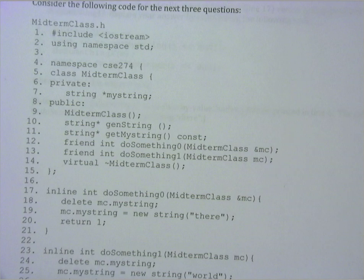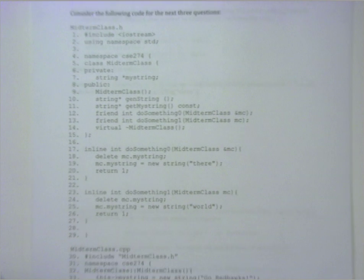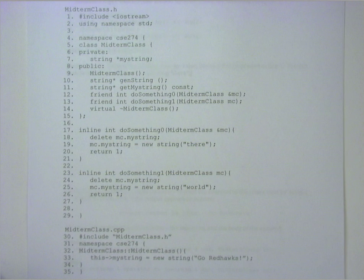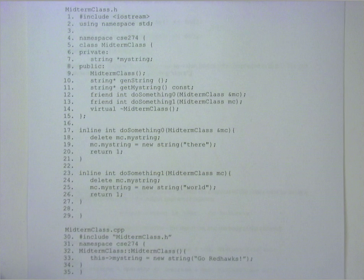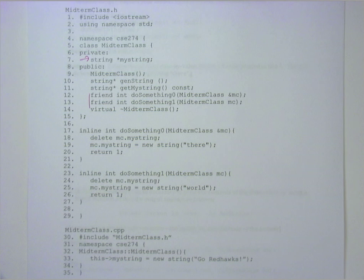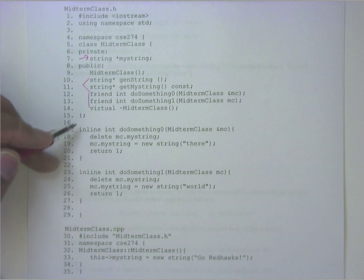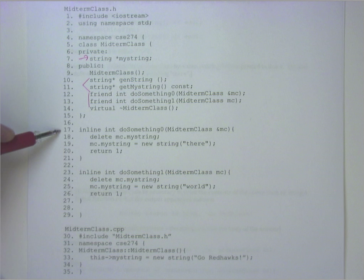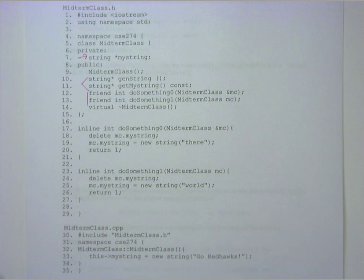The next few questions were based on using this code here for midterm class. There's a number of different features here that you wanted to pay attention to. There were some friend functions here. This had a private attribute of string. There were two methods that were used to generate strings. You see here that in lines 17 to 26, we have the friend functions. And then at the bottom is the code for a constructor. With this in mind, there were a couple of questions.